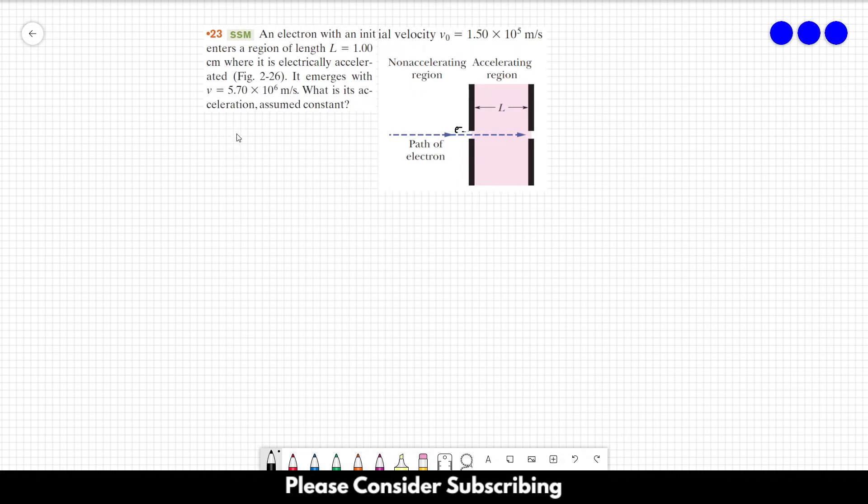What is its acceleration assumed constant? So the acceleration is constant, and if the acceleration is constant, we have three different equations that we can use. We have x equals to x₀ plus v₀t plus a times t squared over 2. We have v equals to v₀ plus at, and we have v squared equals to v₀ squared plus 2 times a delta x. Those are the three equations that we have if the acceleration is constant. But in this case, we can, because acceleration is constant.